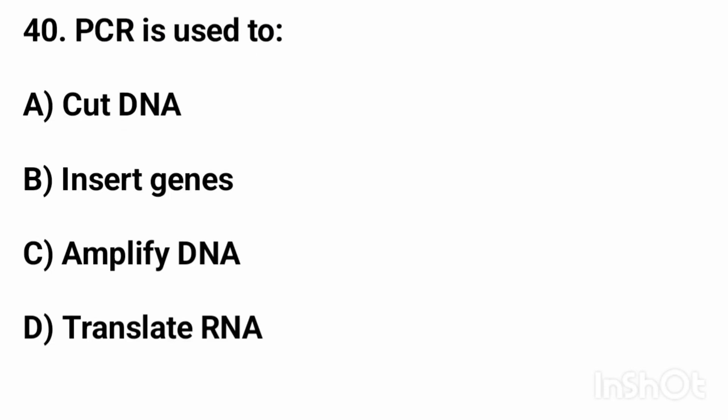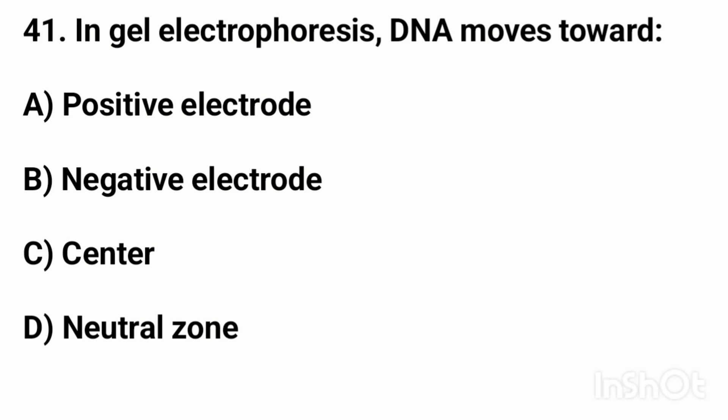Question forty: PCR is used to? The right answer is option C, amplify DNA. Question forty-one: in gel electrophoresis, DNA moves towards? The right answer is option A, the positive electrode.